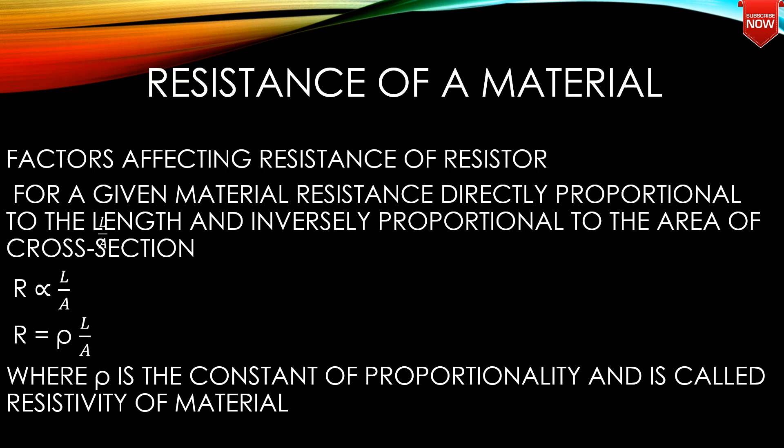Where rho is the constant of proportionality and is called the resistivity of the material. The factors affecting resistance are: material, length, area of cross-section, and temperature.